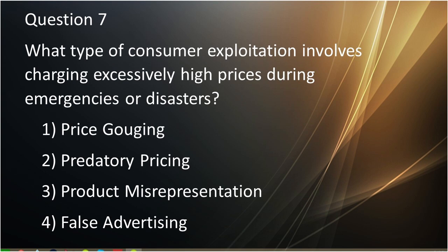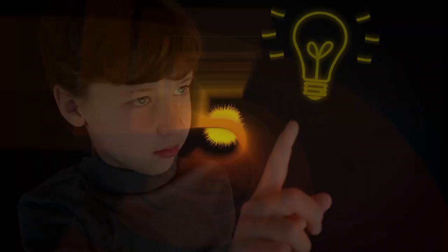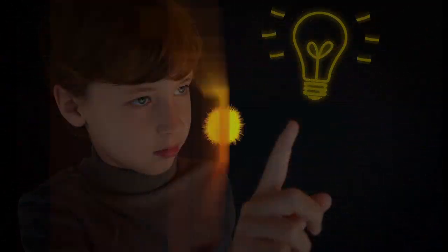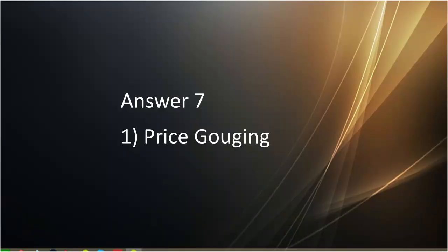Question number seven: What type of consumer exploitation involves charging excessively high prices during emergencies or disasters? First is price gauging. Second is pre-rating pricing. Third is product misrepresentation. Fourth is false advertising. Answer to question number seven is price gauging.